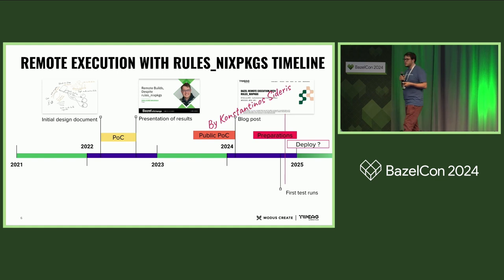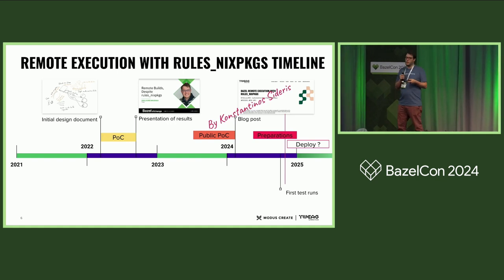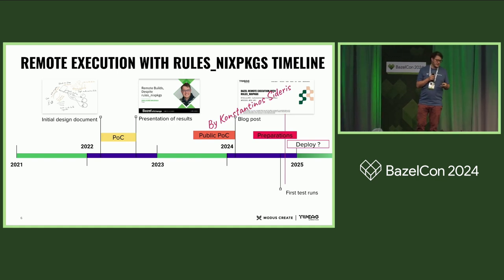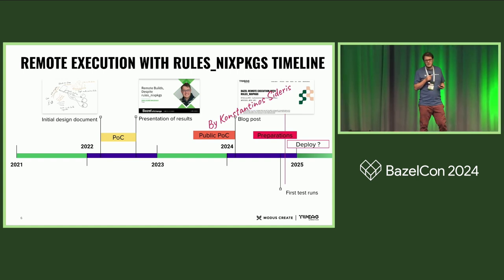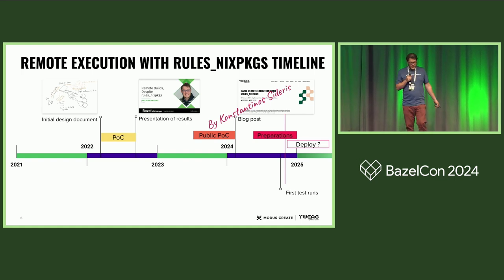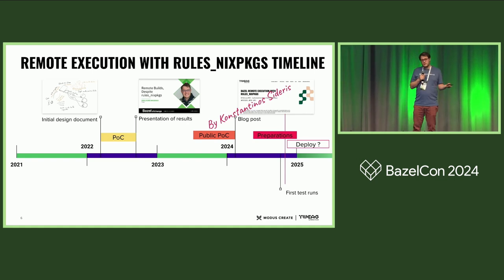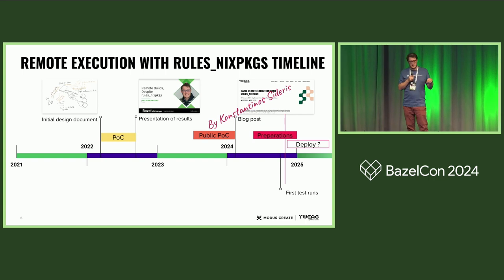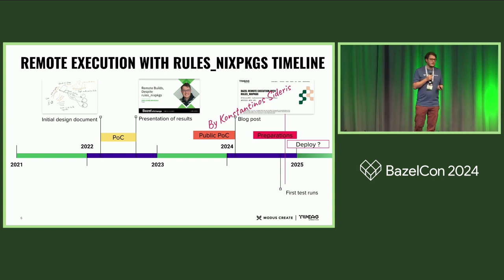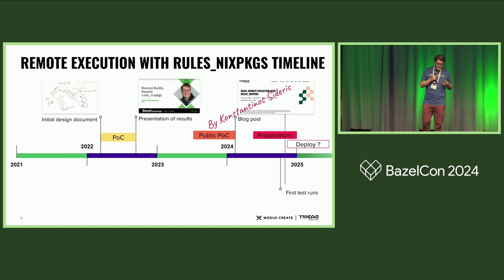In the meantime, Constantino Sideris from Tweek made an open source proof of concept. You can download all the files — there is a blog post on the Tweek blog about that. It's working well, but it's a proof of concept on a simple code base. What I've been doing for the past few months is preparation on the Intuitive code base so that it could be remotely executed — executing every single action in a Bazel sandbox to check that all inputs are provided, everything is correctly cached, and we don't rely on non-hermetic things.